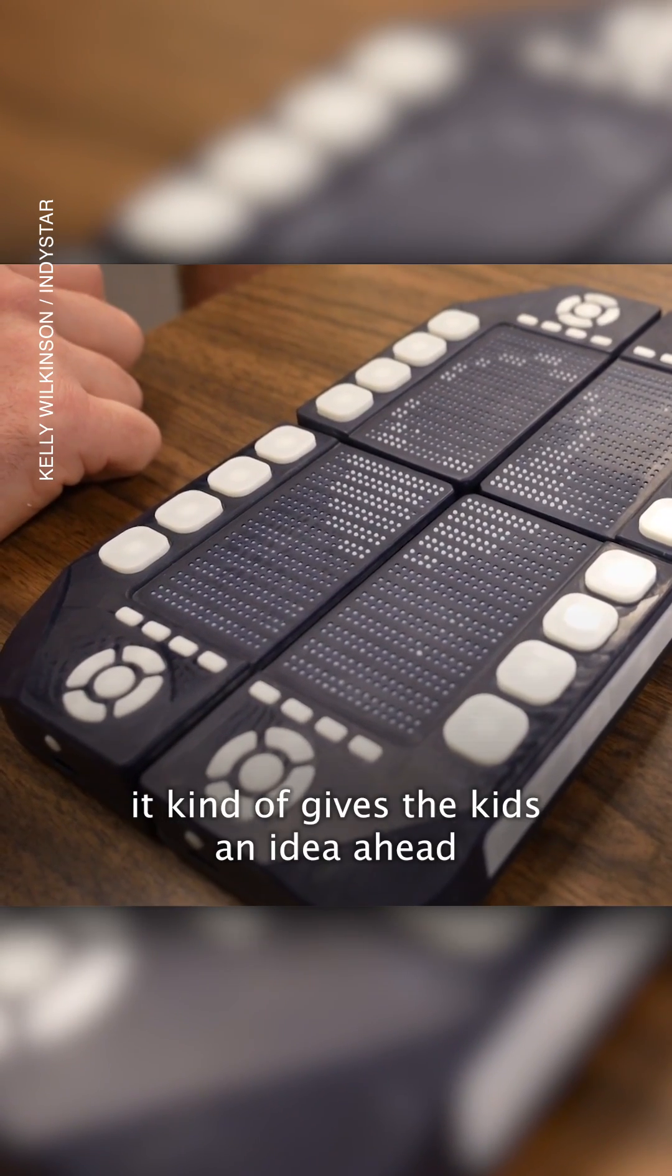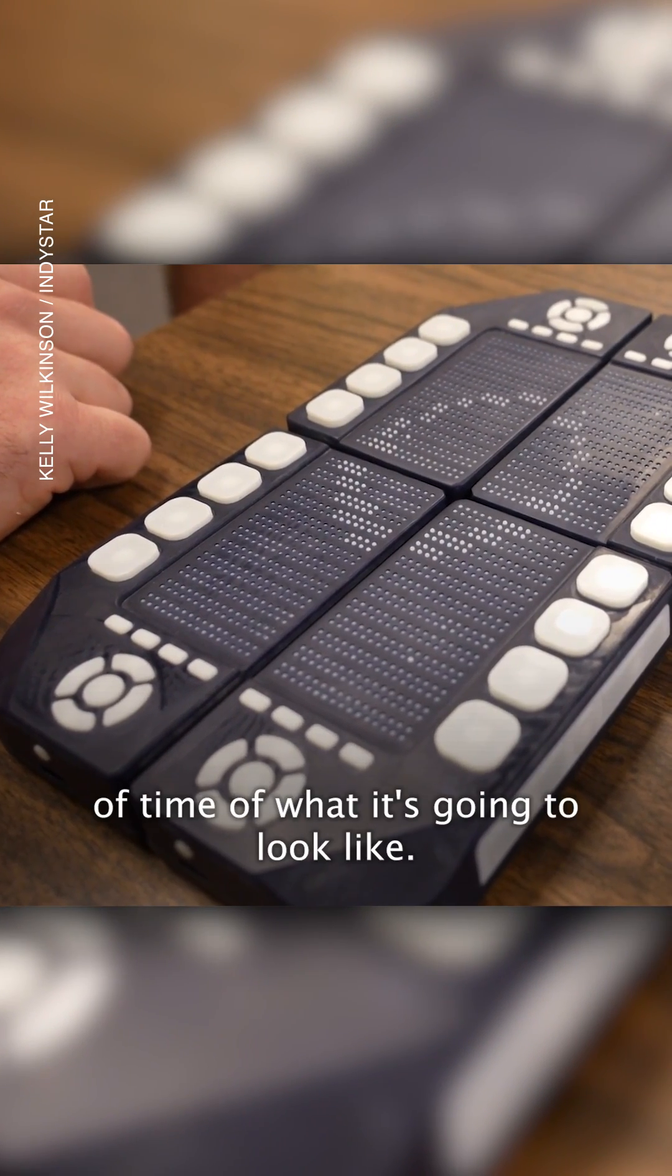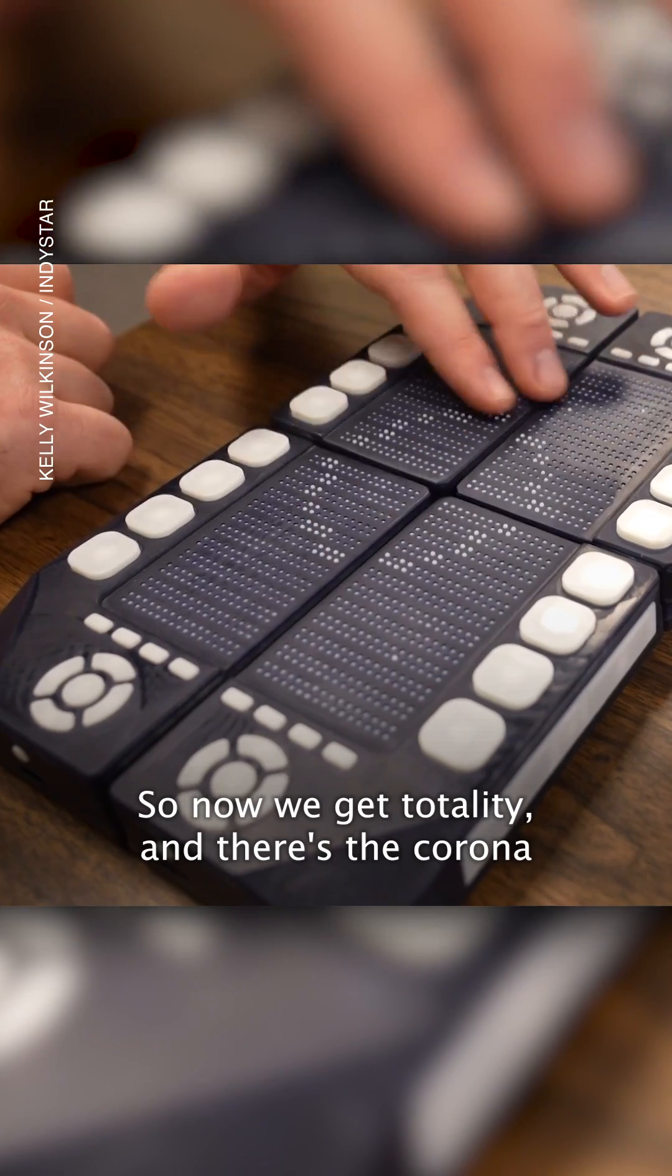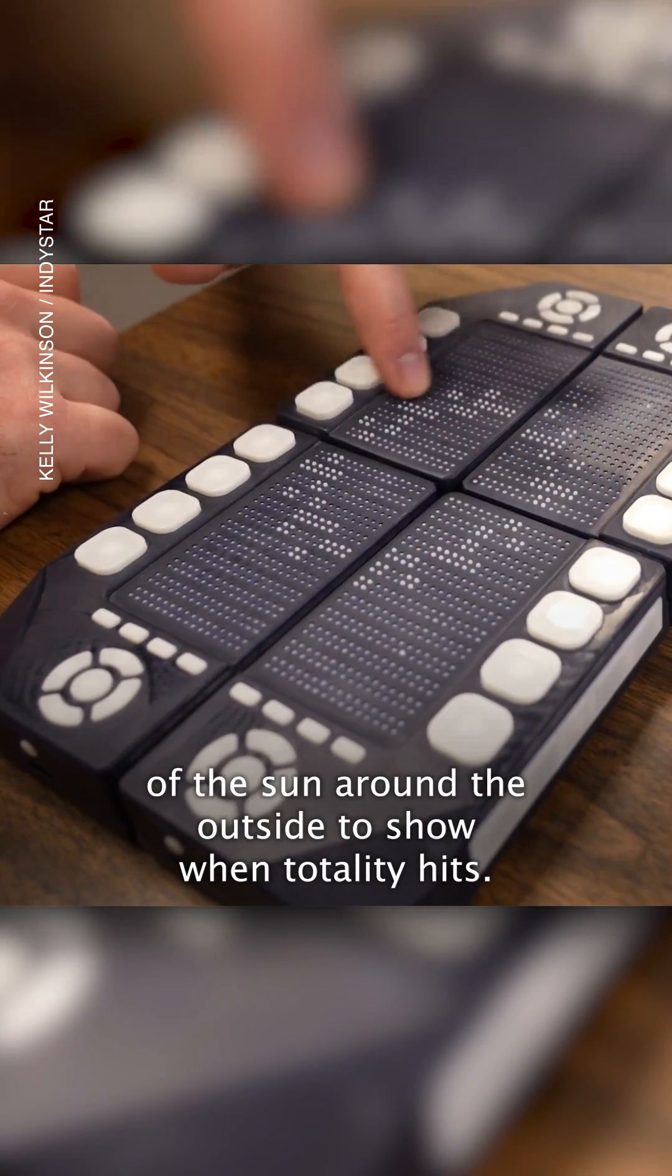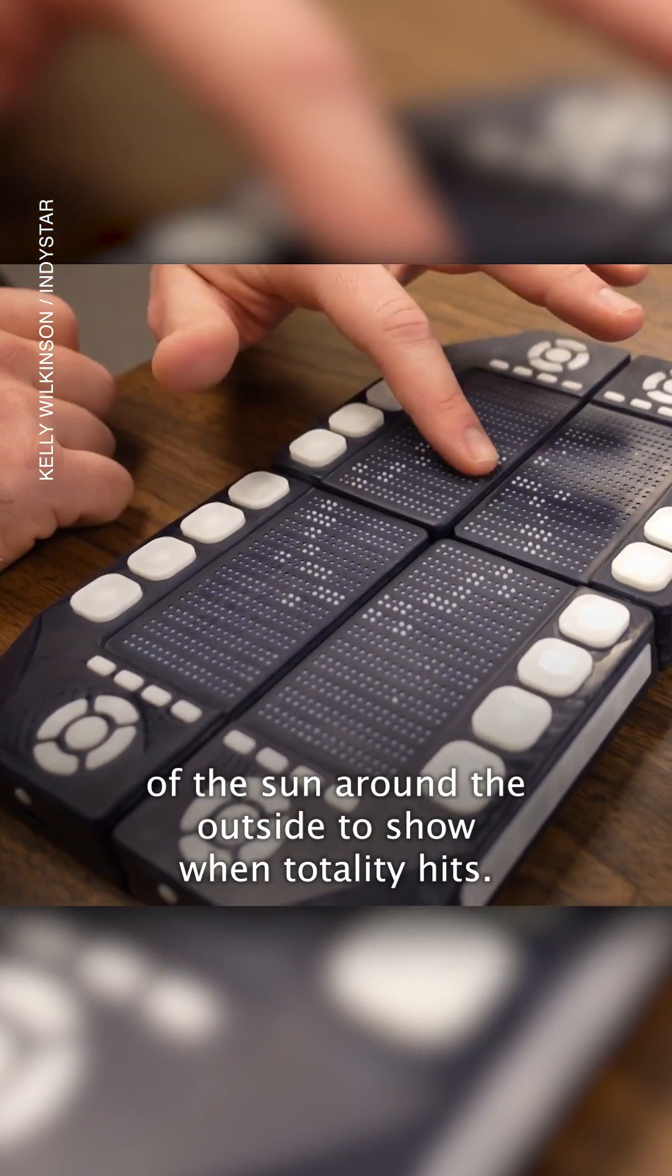So this is just a simulation to give the kids an idea ahead of time of what it's going to look like. So now we get totality, and there's the corona of the sun around the outside to show when totality hits.